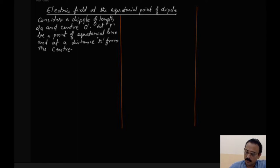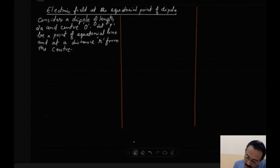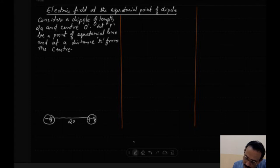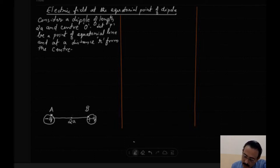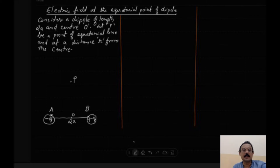For this we have to consider a dipole system. We take a minus q and a plus q, separated by a distance 2a. Let this point be considered at point A and this point at point B. The center of the dipole is taken as O. Exactly along the equatorial line, we consider a point P such that the distance from point P to A is x, and point P to point B is also x.